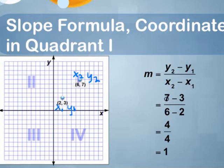That means 7 minus 3 in the numerator and 6 minus 2 in the denominator. Simplify the numerator and denominator. Then simplify the expression. The slope of the line that crosses these two points has a slope of 1.